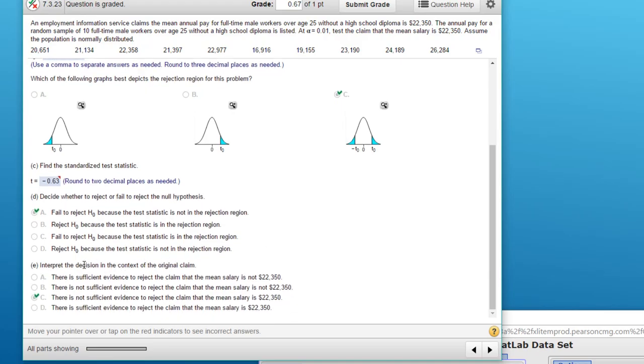So the last part is interpret the decision. And you got it right. The claim was the null. We do not reject the null. We fail to reject the null. Therefore, there's insufficient evidence to reject the claim. So that makes sense. So I hope this helps.